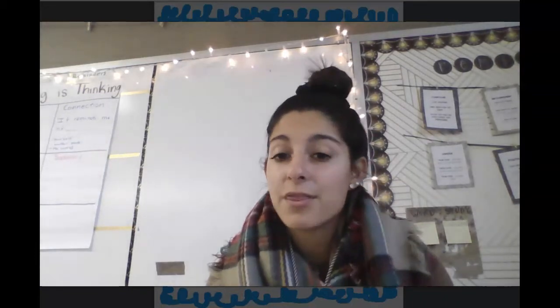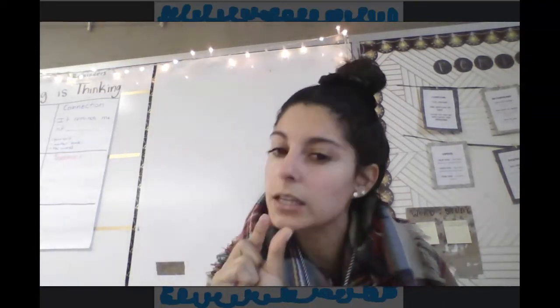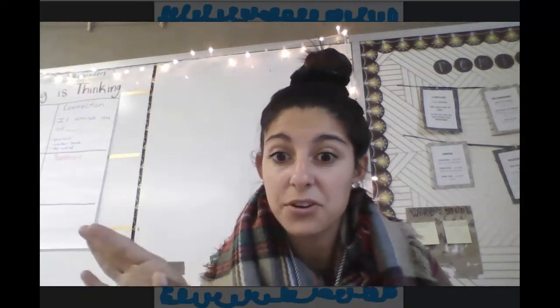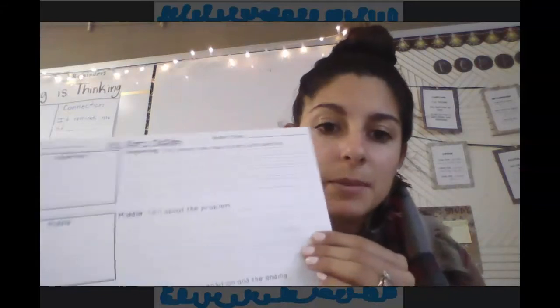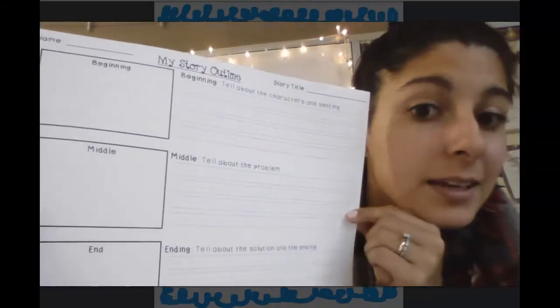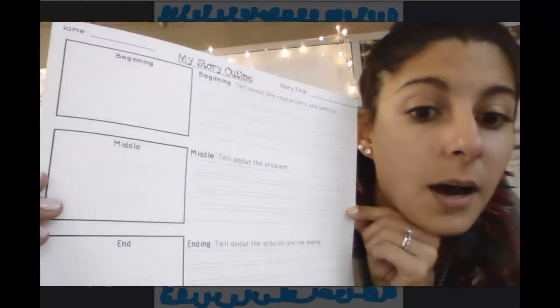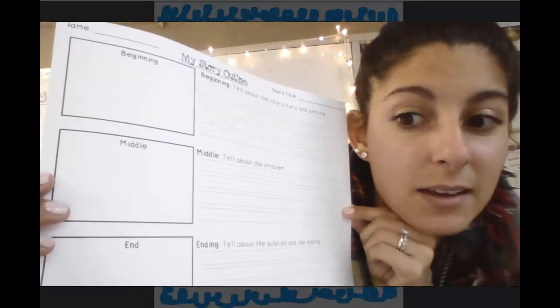Now what you need to do is write out your beginning, your middle, and your end. Things are changing just a little bit — you're still going to be publishing on KidBlog, but not today or tomorrow. You'll go on KidBlog on Thursday. Today, on a piece of paper, you're going to do something like this where we come up with a beginning, a middle, and an end.